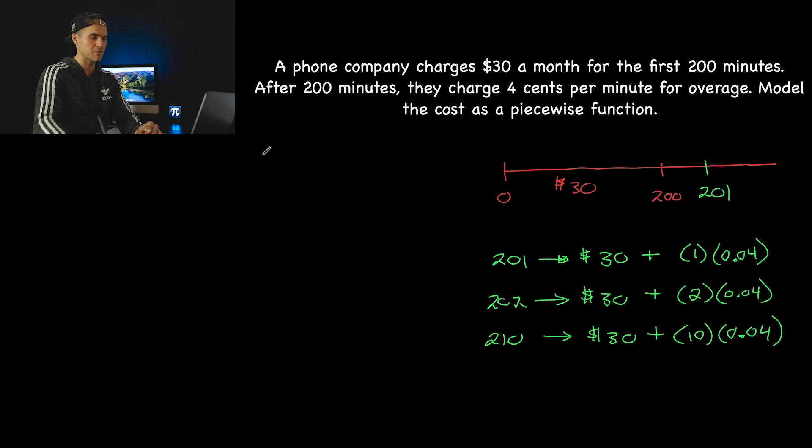So I just wanted to mention that before we actually make this function or get into the algebra. So what I'm going to do is I'm going to actually introduce some new variables here. So I'm going to let C equal the cost, and then I'm going to let X equal the number of minutes that are used.